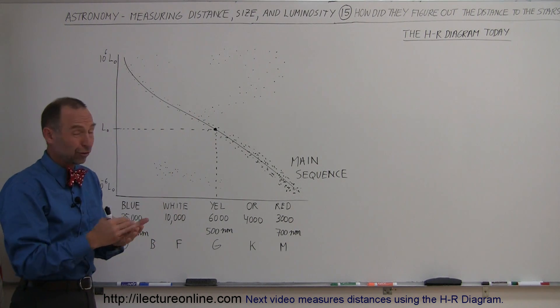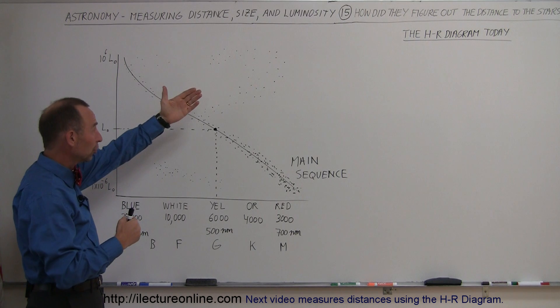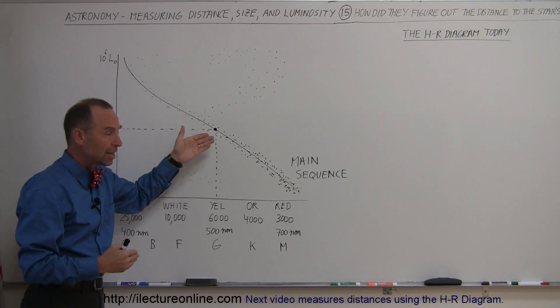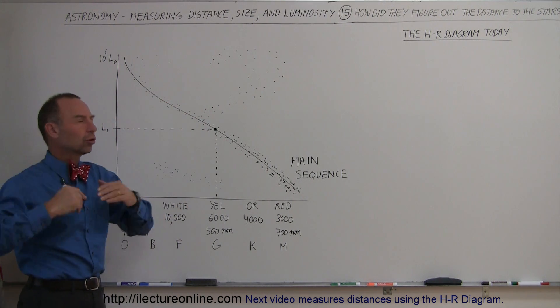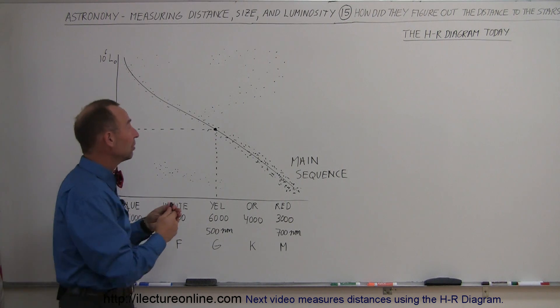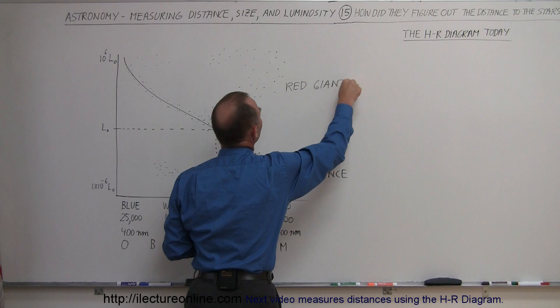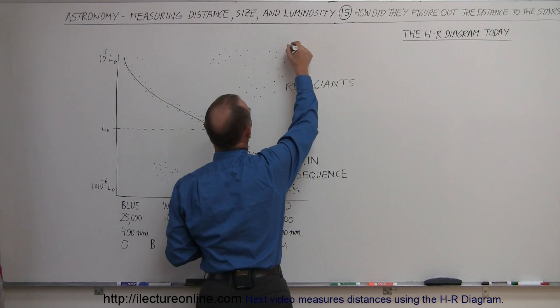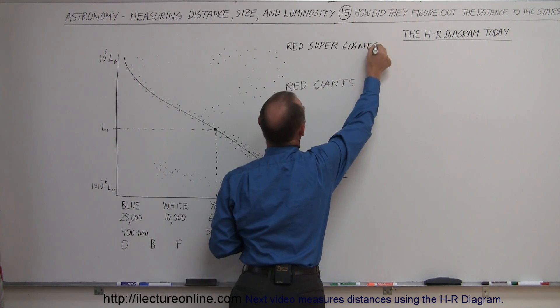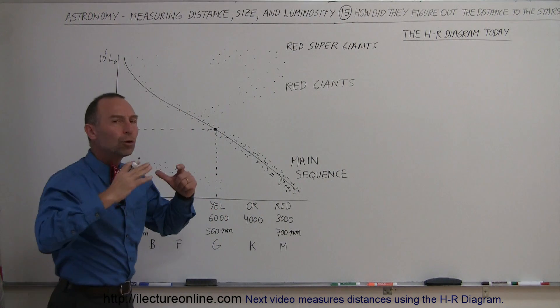Well, cooler surface should normally mean much less luminous. But if they're that much more luminous than the stars over here, they must be much, much larger. And that's indeed the case. These are called red giant stars. And the ones that are way up here are actually called red supergiants. So these stars have grown to enormous size.